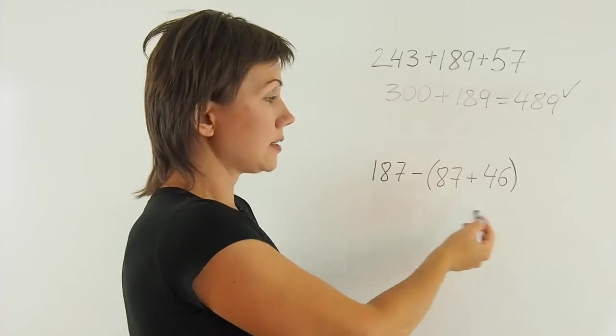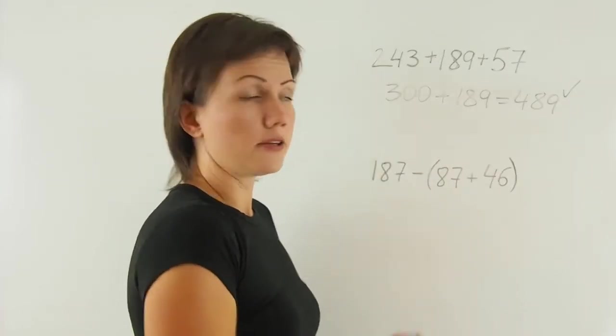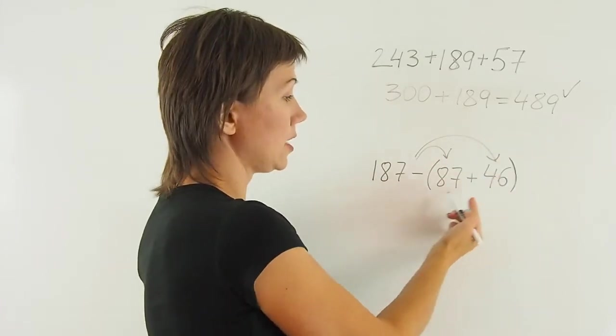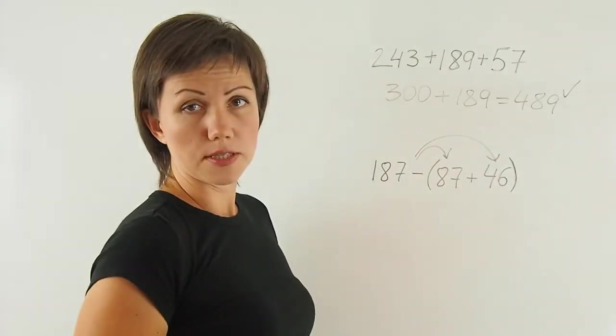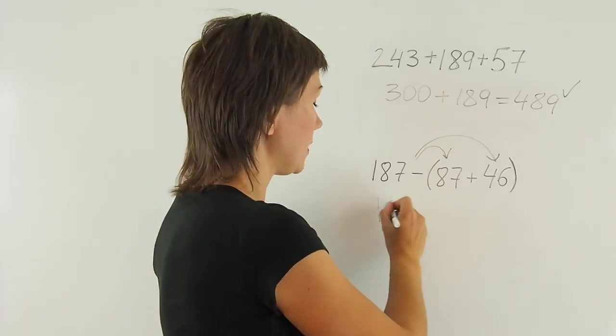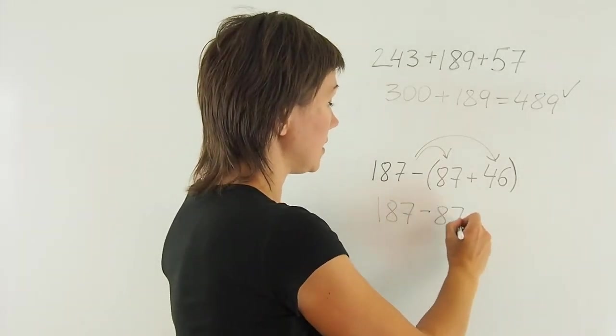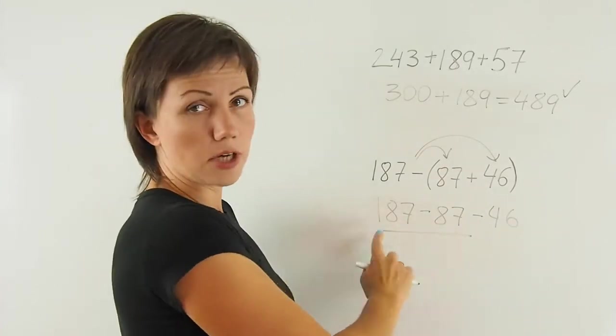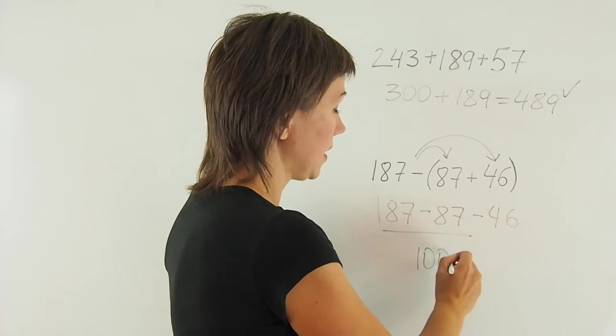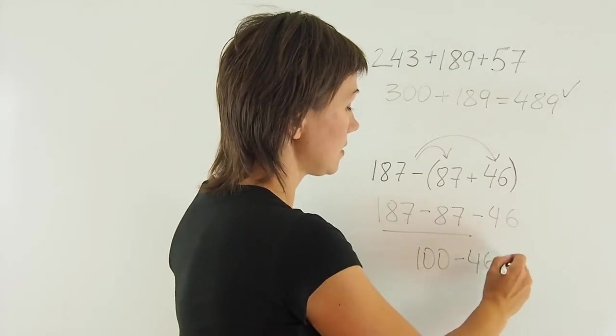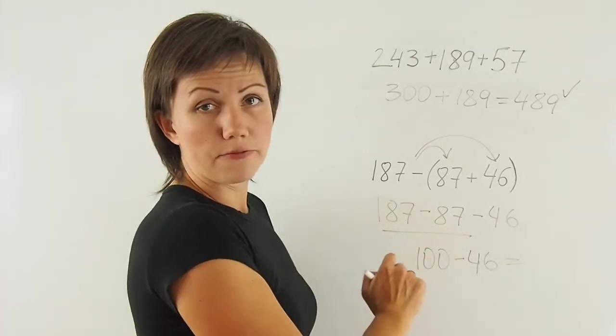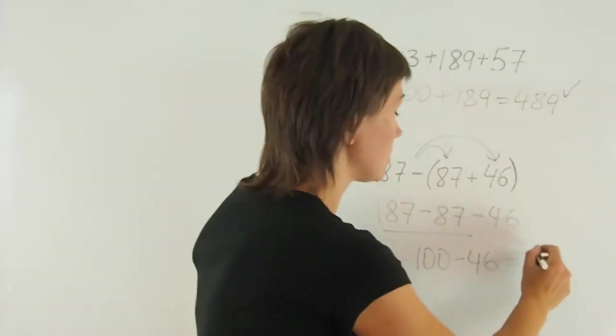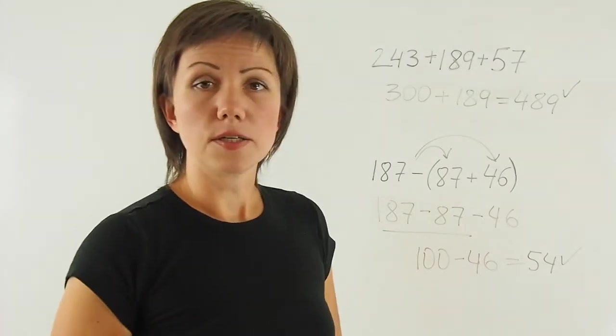Next, if I want to subtract the sum of two numbers from another number, I will drop the brackets. But when I do that, I change the signs of both numbers inside the brackets to the opposite. 187 subtract 87 subtract 46. I can easily subtract these two numbers and get 100, and then subtract 46. 100 minus 40 is 60, and 60 minus another 6 is 54. That's the answer.